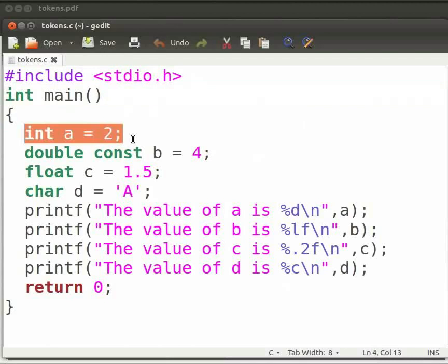Here, int is a keyword. The compiler knows the meaning of keywords. A is an integer variable. We have assigned a value of 2 to it. This is called initialization. If a value is not assigned to a variable, then it is called declaration of the variable.